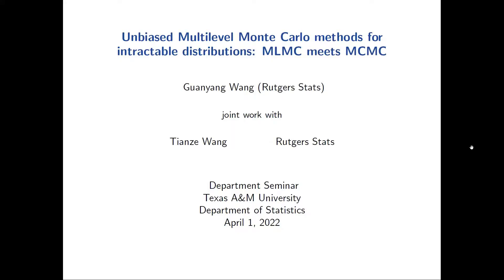Good morning, everyone. Welcome to our Friday seminars. It is my pleasure to introduce our speaker today, Dr. Guanyang Wang from Rothschild University. He had a scheduled conference today, so I'm glad he could be here with us. Guanyang is an assistant professor in the Department of Statistics at Rothschild University, and prior to joining Rothschild, he did his PhD in Mathematics from Stanford University.